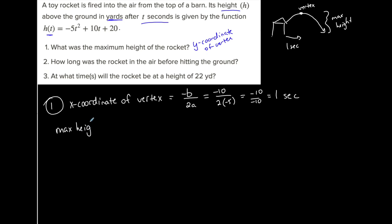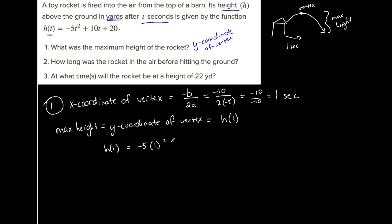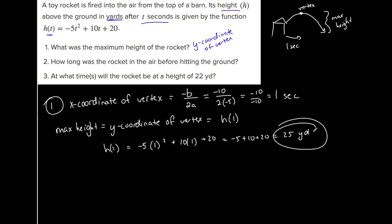Let's find our maximum height, which is our y-coordinate of the vertex. If I want to find h of t, I'm plugging in my t. So h of 1 represents my maximum height based on this situation. H of 1 equals negative 5 times 1 squared plus 10 times 1 plus 20. Simplifying: negative 5 plus 10 plus 20 gives 25 yards. So 25 yards is my maximum height. In summary, question 1 was about the vertex — it takes 1 second to reach a maximum height of 25 yards.